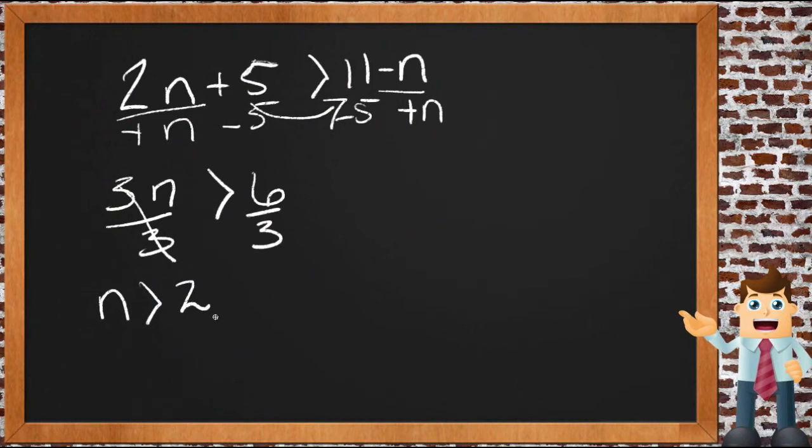So now our question is, is this answer correct? Well if it's correct then n could be any number that was bigger than 2. So we could take any number we wanted as long as it was bigger than 2 and it should be true in this statement up here. So let's try 3. Let's say n equals 3.